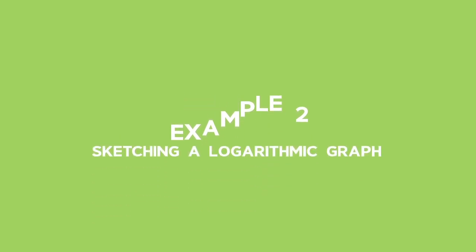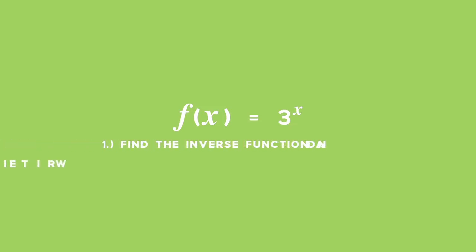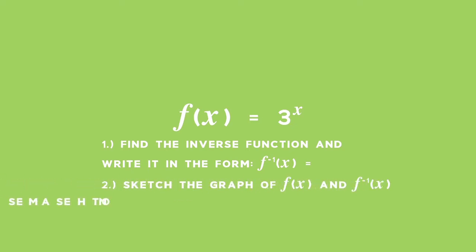Example 2: Sketching a logarithmic graph. Given the function f of x equals 3 to the power of x. Part 1, find the inverse function and write it in the form f inverse of x equals. Part 2, sketch the graph of f of x and its inverse on the same set of axes.